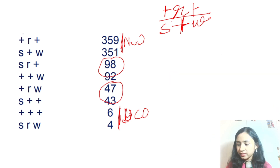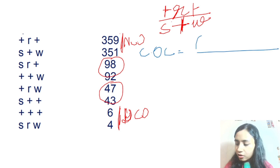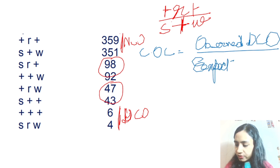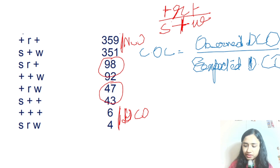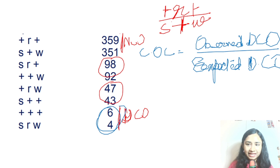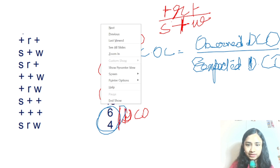Now let's apply these in the problems. To find the coefficient of coincidence, the formula of COC is: observed DCO divided by expected DCO. The observed DCO is what we observe in the question. The expected DCO is the multiplication of SC1 and SC2 — the frequencies of the two single crossover events. Let's solve these sums and find the coefficient of coincidence and the interference.